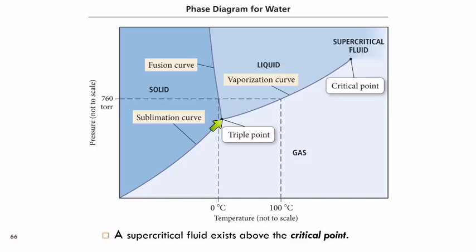This is the triple point. At a low pressure, lower than atmospheric pressure and somewhat above the freezing point, you can have gas, liquid, and solid water all in equilibrium with each other.